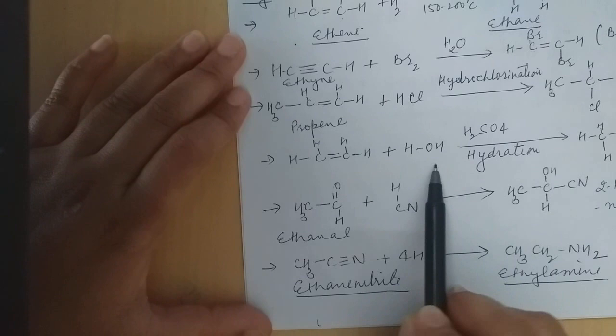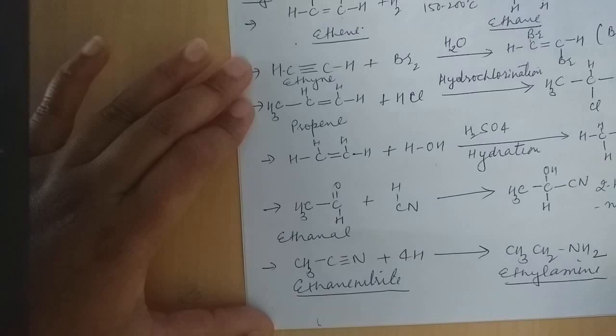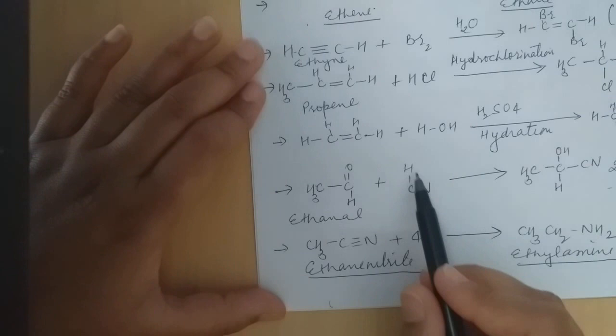If we look at an alkyne or ethyne, we use hydration — that means addition of a water molecule. Hydration is done, so H and OH attach on the carbons and this is the addition product here. Ethenol is the addition product.